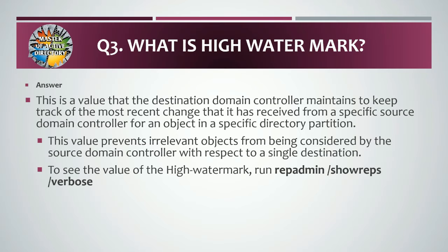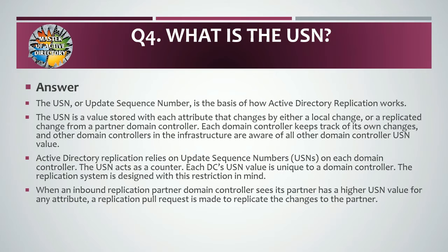Question number three: what is high watermark? Answer: This is a value that a destination domain controller maintains to keep track of the most recent change that it has received from a specific source domain controller for an object in a specific directory partition. This value prevents irrelevant objects from being considered by the source domain controller with respect to a single destination. To see the value of the high watermark, run the repadmin /showrepl /verbose command.